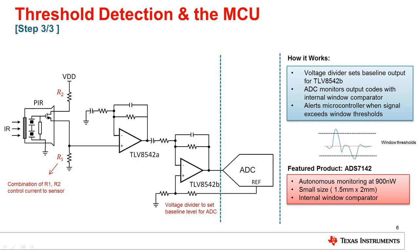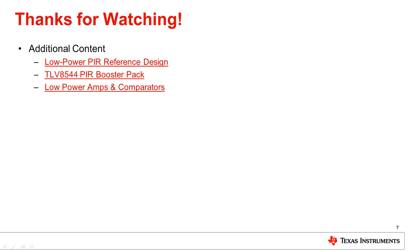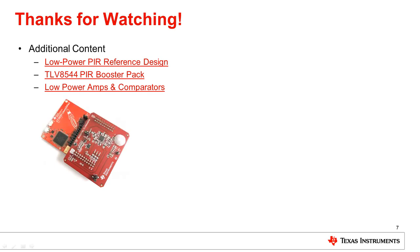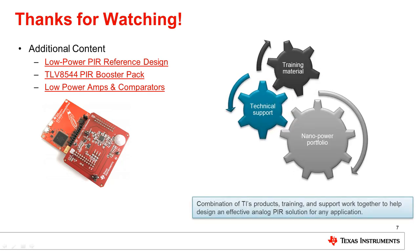Now that we have a basic understanding of how a PIR circuit works along with the differences between analog and digital solutions, we can look at further resources to help you design a PIR motion detection system. TI has many resources to help you out with your designs. Listed here is a low-power PIR reference design as well as a demo board containing a fully functional PIR circuit you can experiment with. TI's large portfolio, training resources, and support all mesh together to make it easy to design an analog PIR solution for any application. If you'd like to see more low-power amplifiers to save power in your signal chain, make sure to check out the link above.